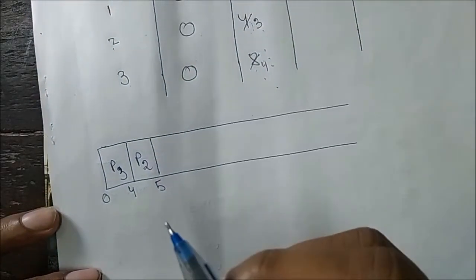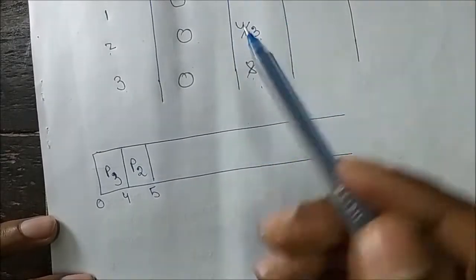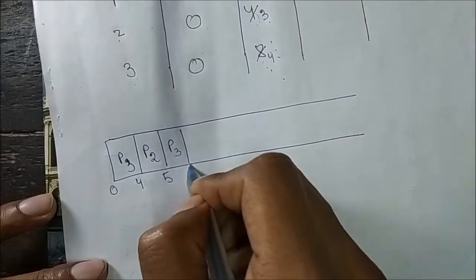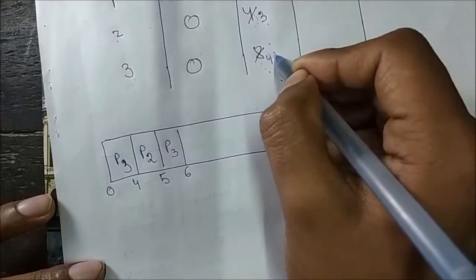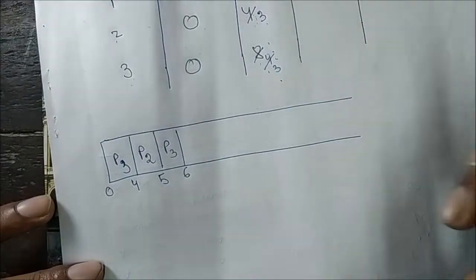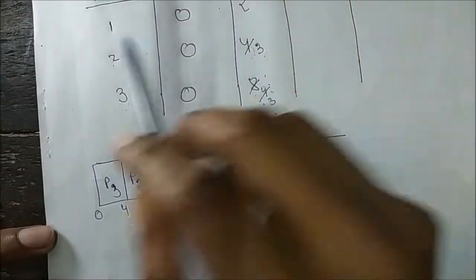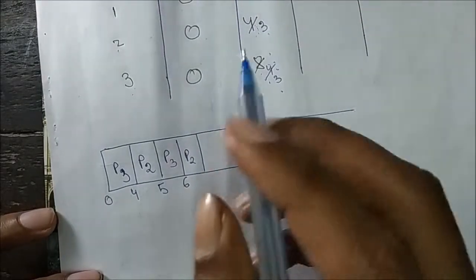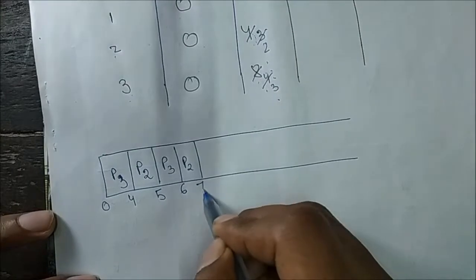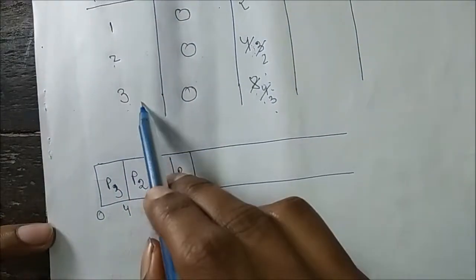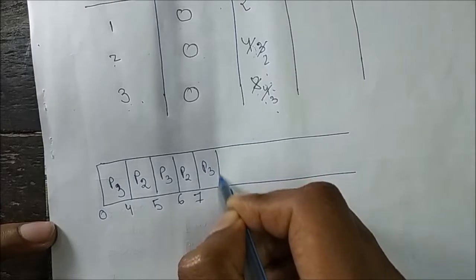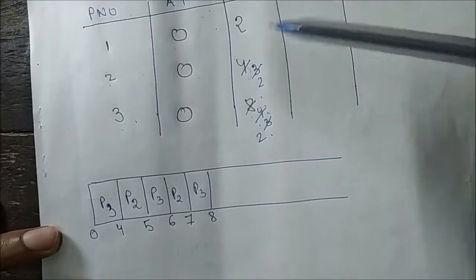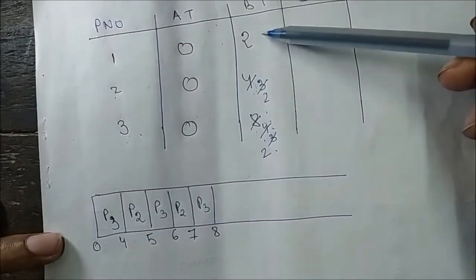Now P3 has the highest remaining burst time, so P3 runs for 1 unit, reaching time 6 with remaining burst time 3. Then P2 runs for 1 unit reaching time 7 with remaining burst 2, then P3 runs for 1 unit reaching time 8 with remaining burst 2. Now P2 and P3 both have remaining burst time of 2.